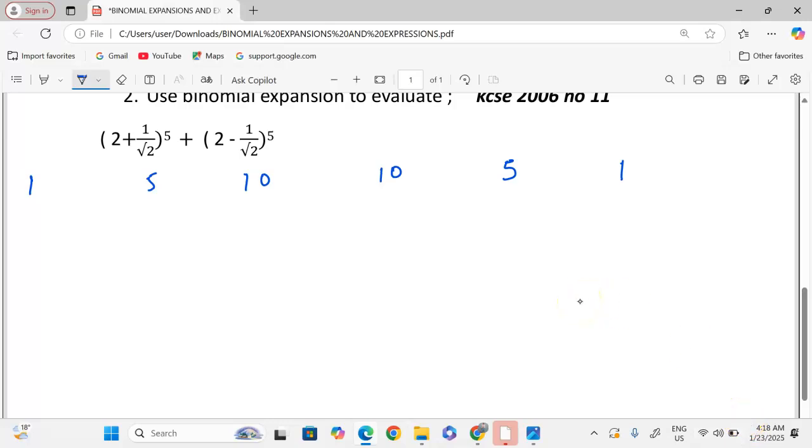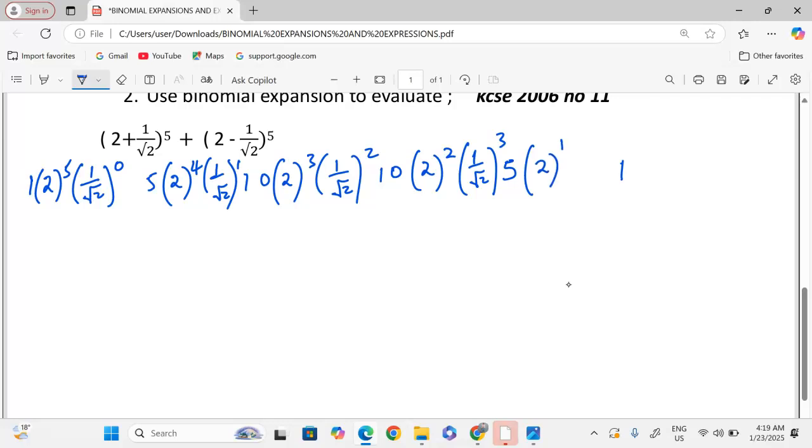Now we can start the first term. I'm dealing with the first expansion. This is 2 raised to power 5, then 1 out of the root of 2 is raised to 0. The next term, 2 goes to power 4, and 1 out of the root of 2 takes power 1. Then, we have 2 raised to power 3, 1 out of the root of 2 becomes power 2. 2 power 2, then 1 out of the root of 2 goes to power 3. 2 power 1, then 1 out of the root of 2 goes to power 4. And, finally, 2 will be to power 0 as 1 out of the root of 2 takes power 5.